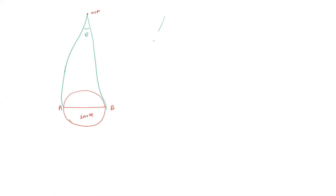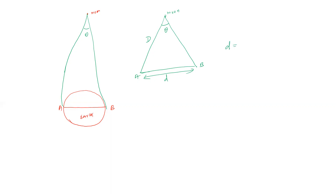The angle theta is subtended at the moon. This is the diameter A and B on the Earth. If the distance of the moon from the Earth is much greater than the diameter of the Earth, the moon is treated as the center of a circle, and the radius is the distance of the moon from any point on the Earth.